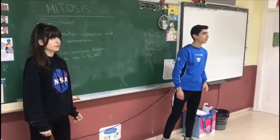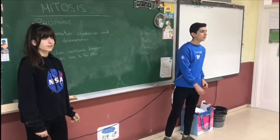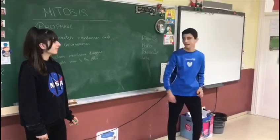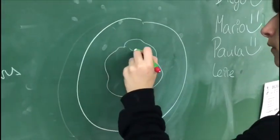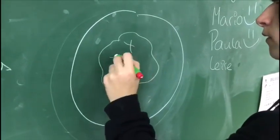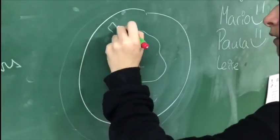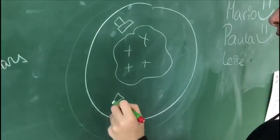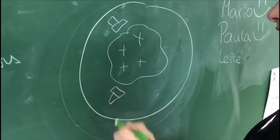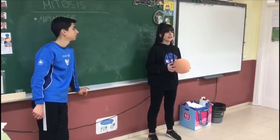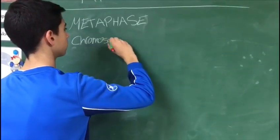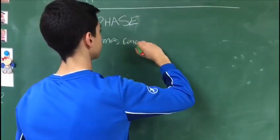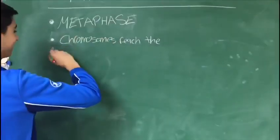Okay, Mario, you have a positive. Let's talk about the second phase. Tell me about metaphase. The chromosomes reach their maximum condensation and they align in the middle of the cell. The microtubules of the spindle reattach to the kinetochore.